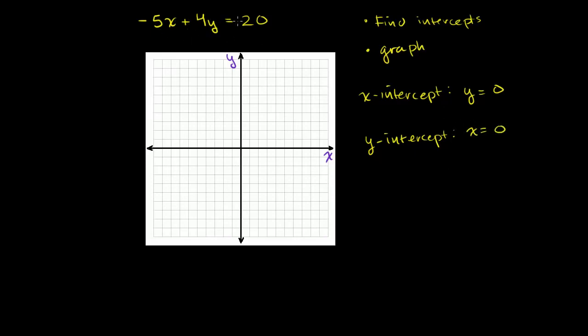So to figure out the intercepts, let's set y equal to 0 in this equation and solve for x. And then let's set x is equal to 0 and then solve for y. So when y is equal to 0, what does this equation become? I'll do it in orange. You get negative 5x plus 4y. Well, we're saying y is 0. So 4 times 0 is equal to 20. 4 times 0 is just 0, so we can just not write that. So let me just rewrite it. So we have negative 5x is equal to 20.